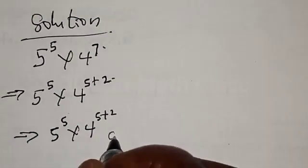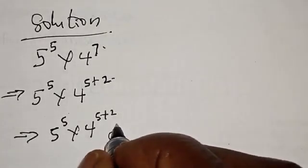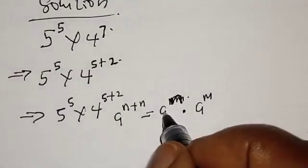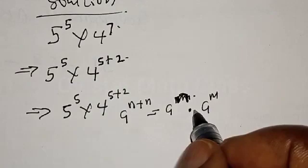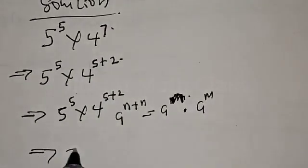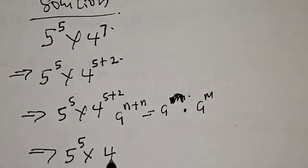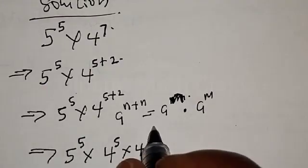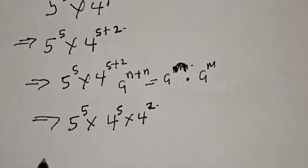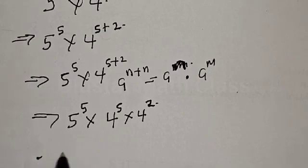Now if you have a raised to power (m plus n), this is equal to a raised to power m multiplied by a raised to power n. So this implies that we have 5 raised to power 5 multiplied by 4 raised to power 5, multiplied by 4 raised to power 2.